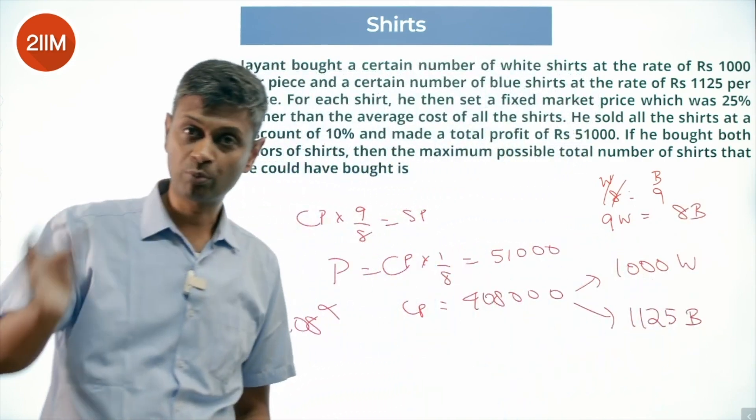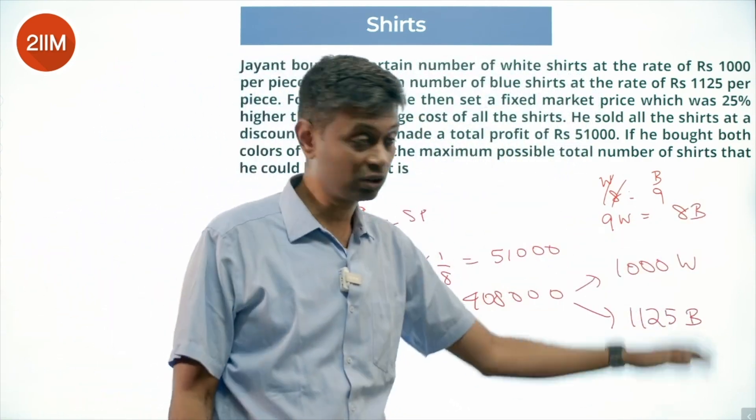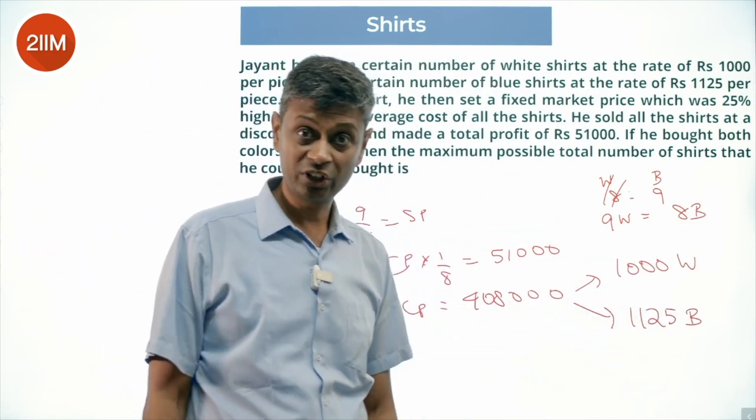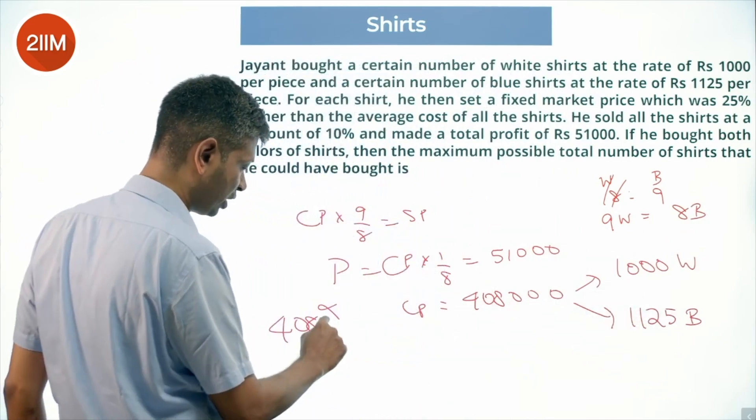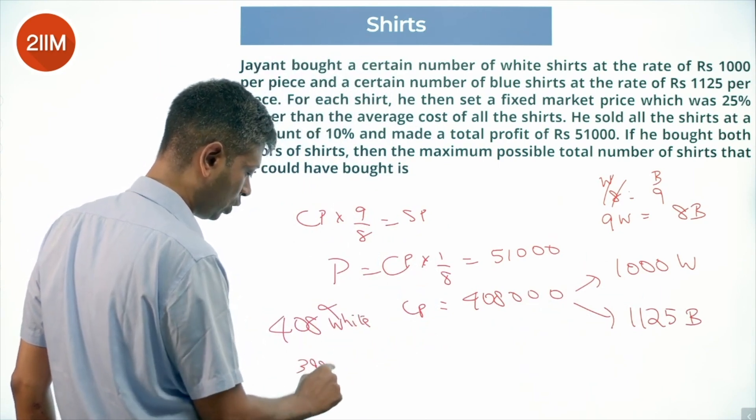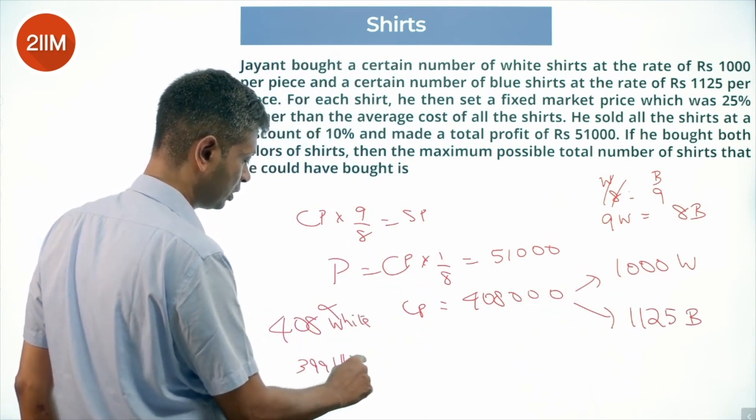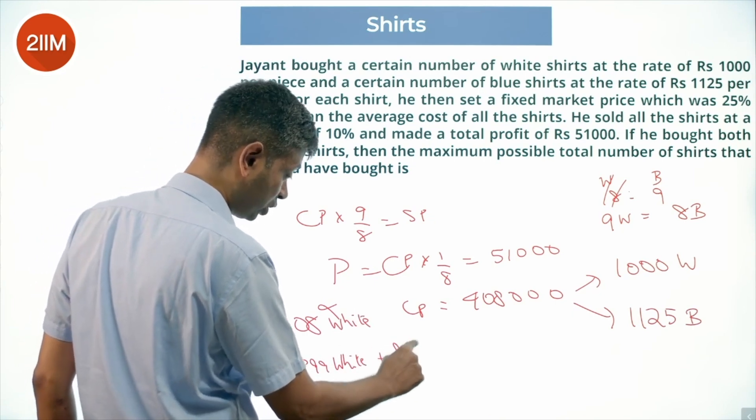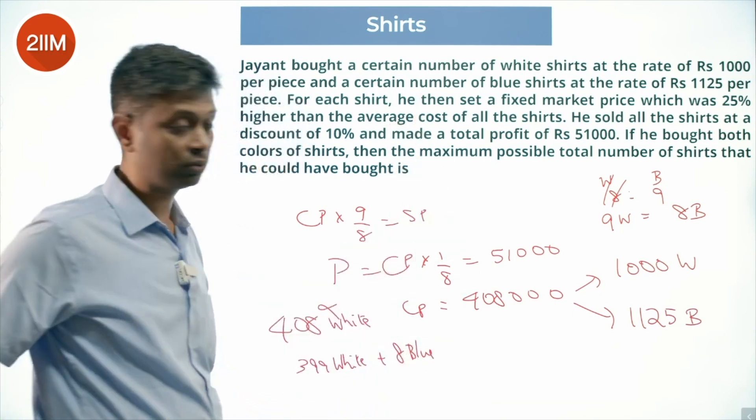It will balance properly when he gives up 9 white shirts and picks up 8 blue shirts. Instead of 408 white shirts, if he had 399 white shirts plus 8 blue shirts, the total cost is still Rs 408,000.